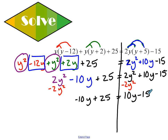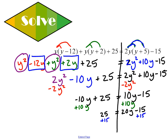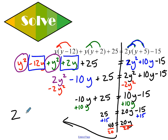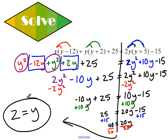I'm going to add 10y on both sides. I'm left with 25 equals 20y minus 15. I'm going to add 15 on both sides, so I get 40 equals 20y. Divide both sides by 20, and I get my final answer of y equals 2. That's it for our notes today. Go ahead and start your homework. Have a great rest of your day.